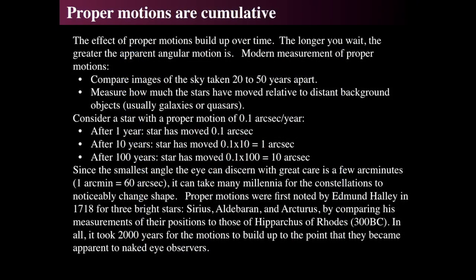Proper motions are cumulative — if you wait, the stars will move. All you have to do is take images over the course of time. This is different from parallax, which wags back and forth because of the Earth's motion around the Sun. As stars move with respect to distant background objects like galaxies and quasars, you can compare images and see what's been moving. For a 0.1 arc second per year motion, a star will move almost a full arc second in a decade.